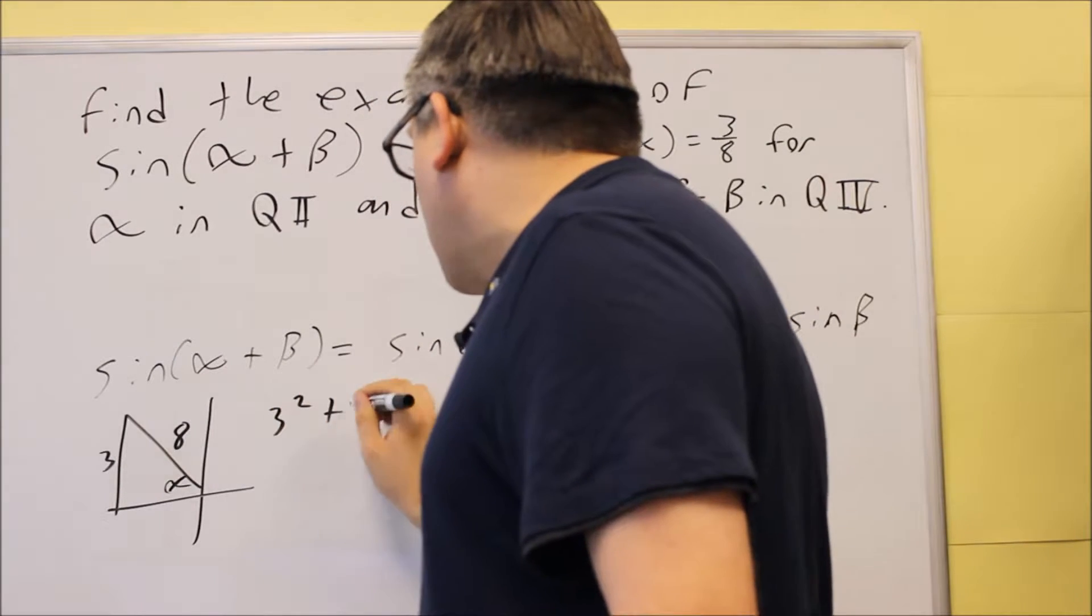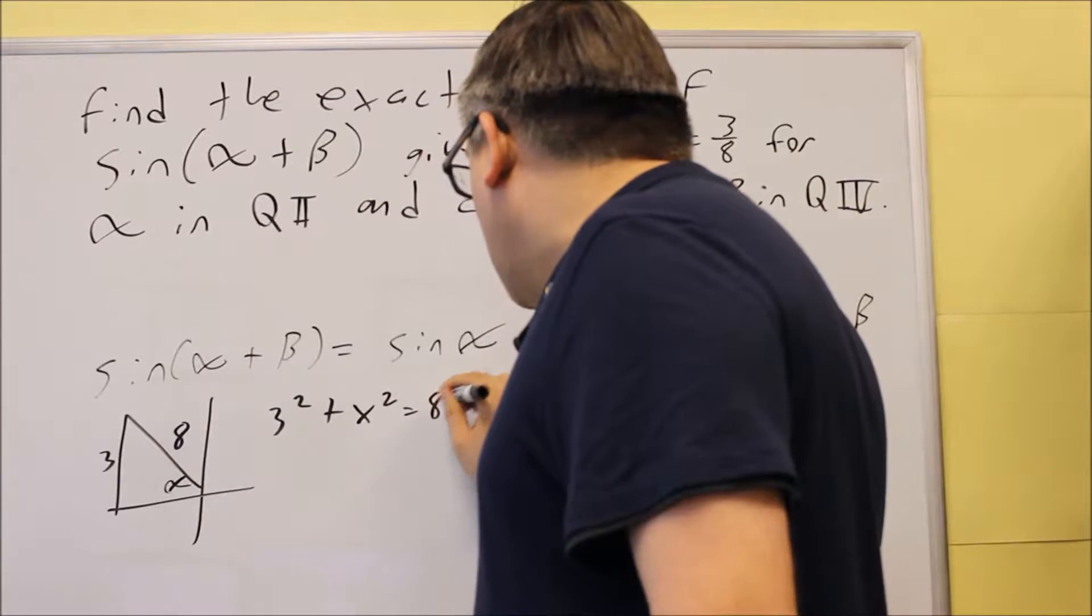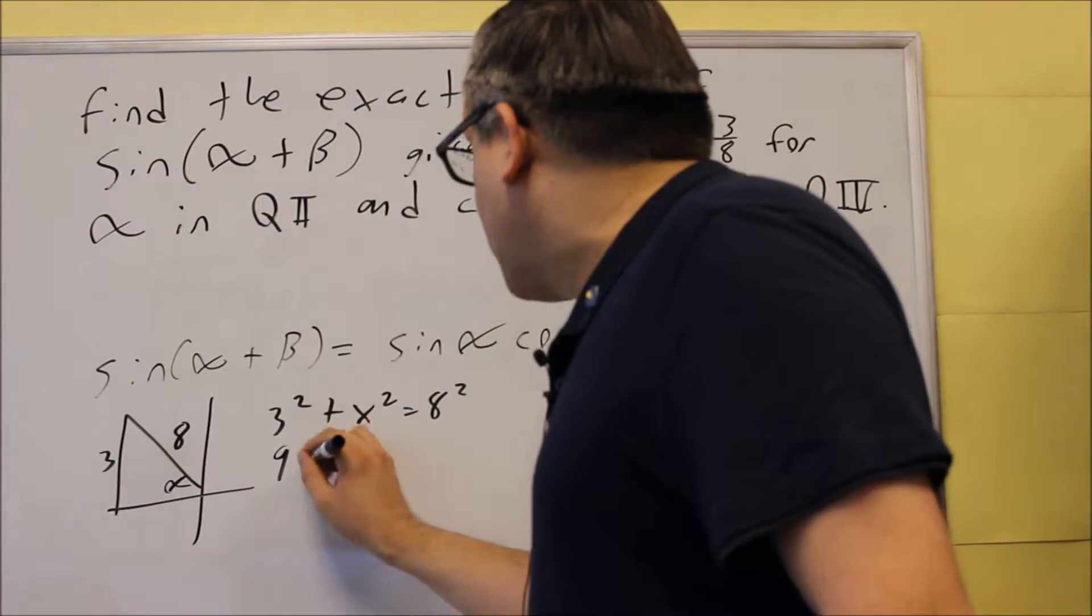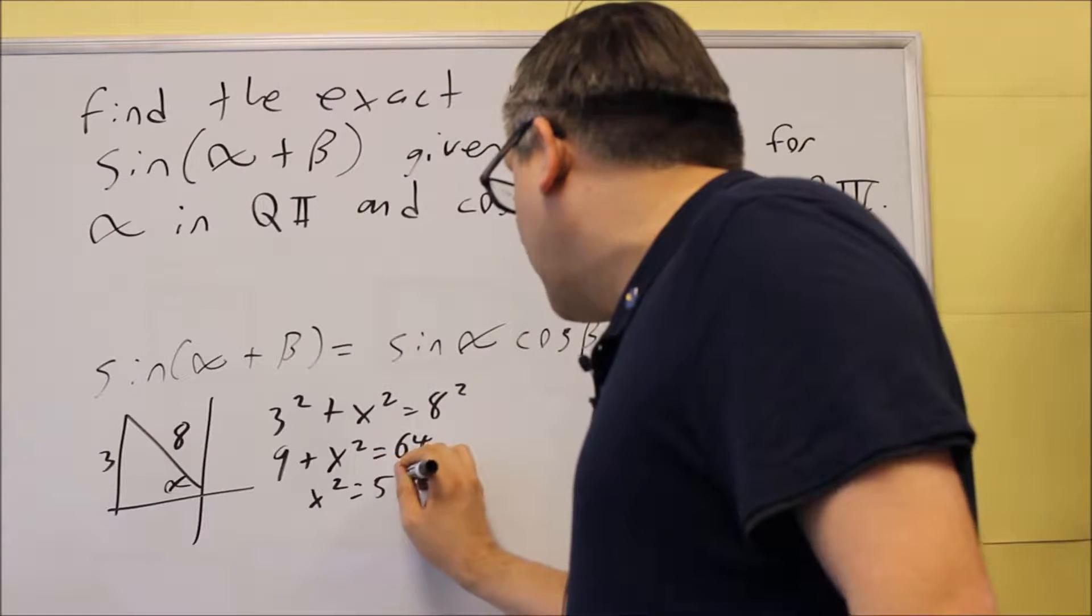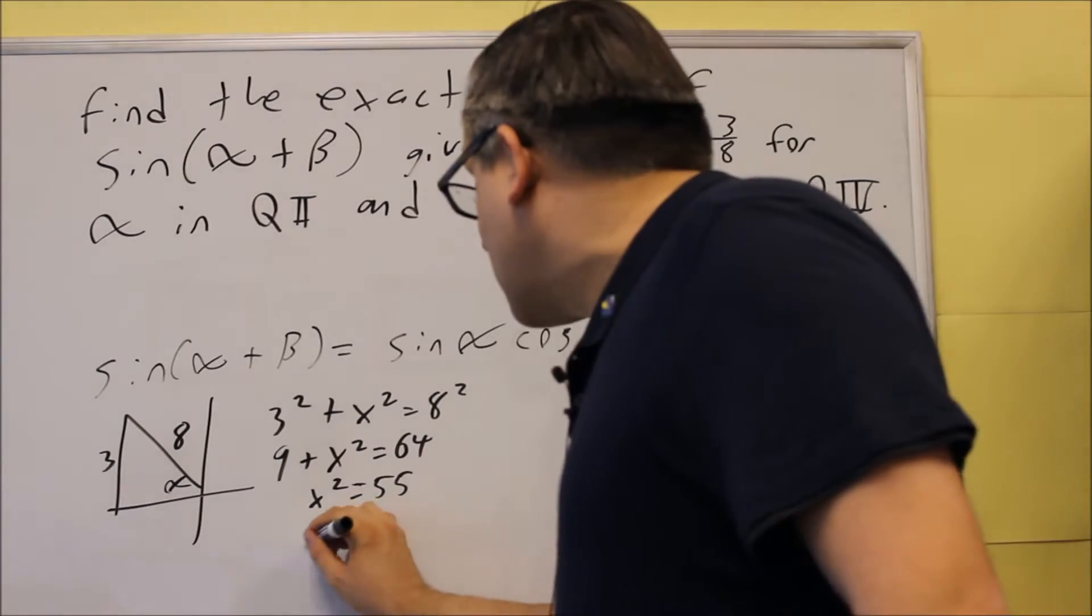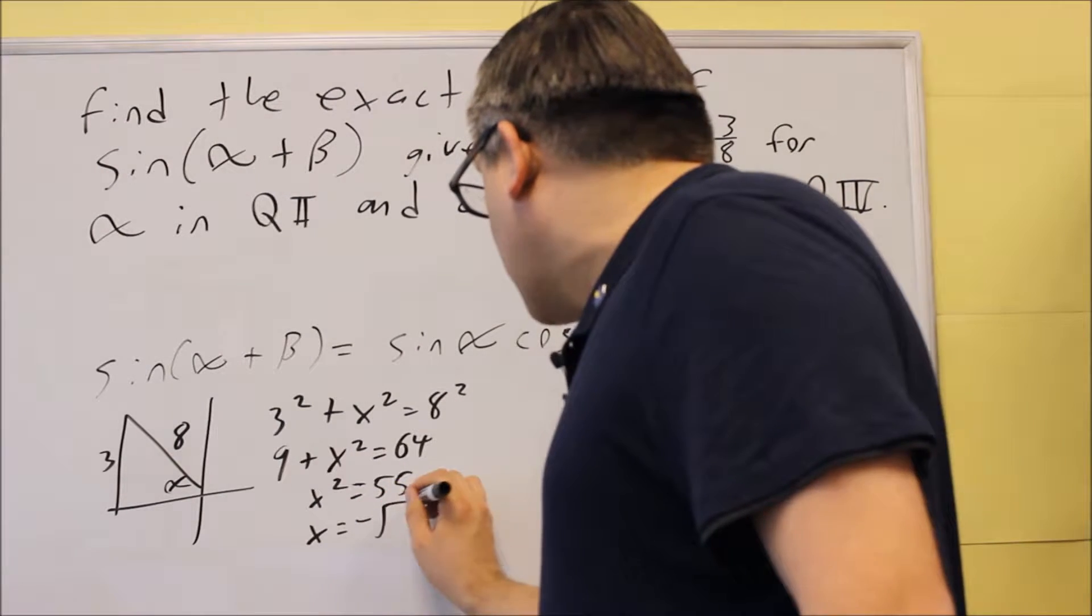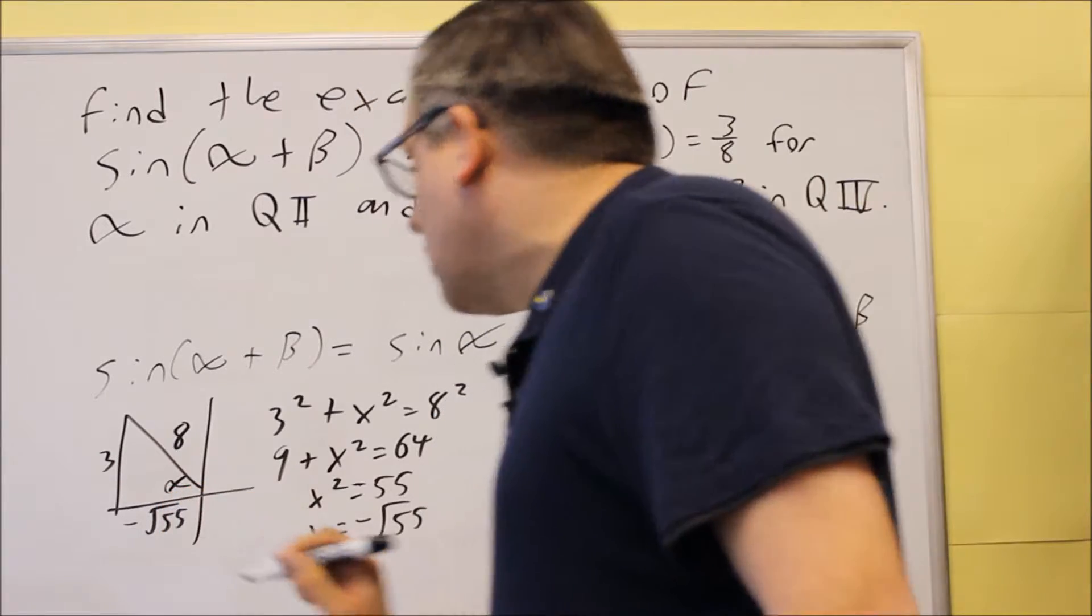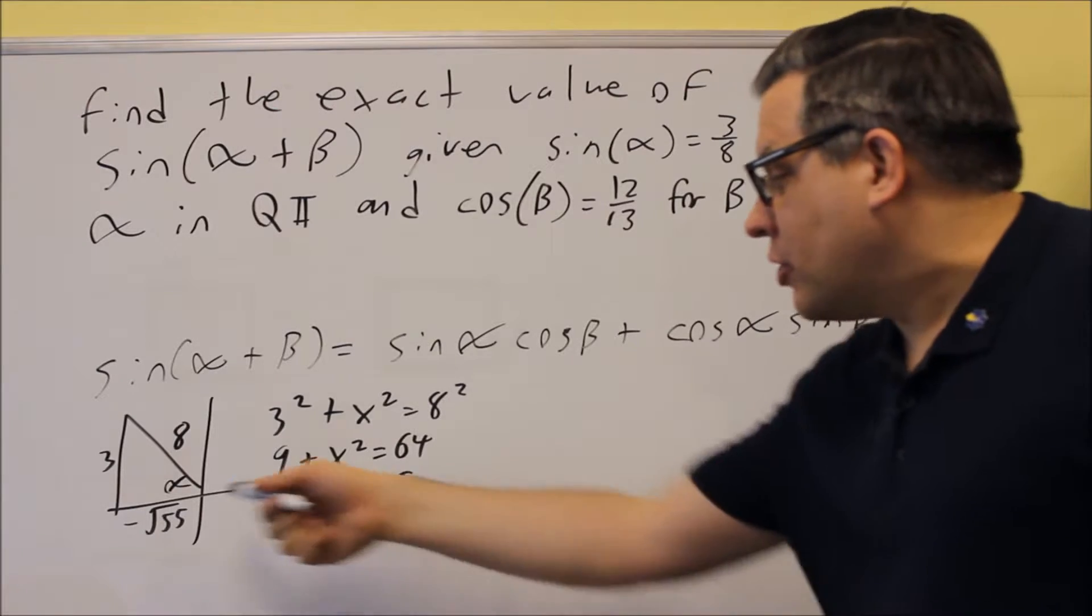So I'm going to do 3 squared plus, I'm going to call this x, the missing side, and then that equals 8 squared. So I get 9 plus x squared equals 64. Subtract the 9, and we get 55. Now, when you take the square root, you get plus or minus, so we have to figure out whether we have a positive or negative. This is where you've got to be careful. This one, you want to actually put negative square root of 55, because look what quadrant we're in. We're in the second quadrant, which means that the x value is going to have to be negative there, so we want to make sure we put the negative sign with it.